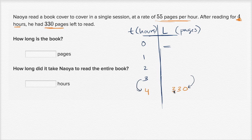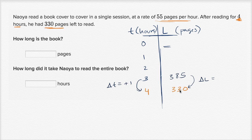Let's see whether this makes sense. When our change in time (Δt) is plus one hour, our change in pages left to read is going to be negative 55 pages. That makes sense — the pages left to read goes down every hour. We're measuring not how much he's read, but how much he has left to read, so that should go down by 55 pages every hour. Going backwards through time, it should go up.